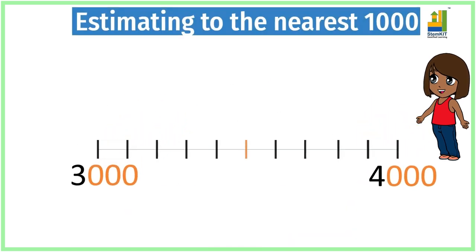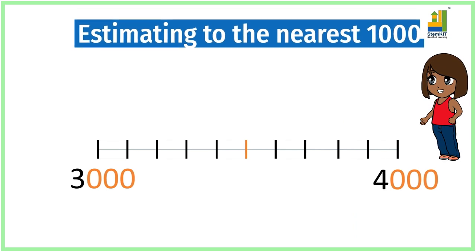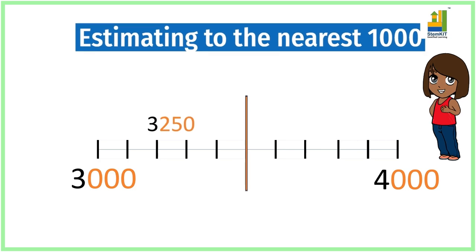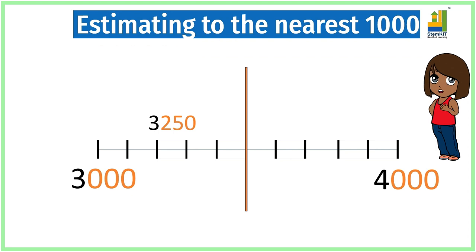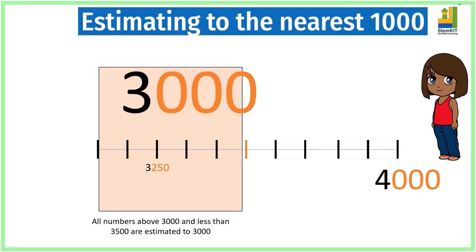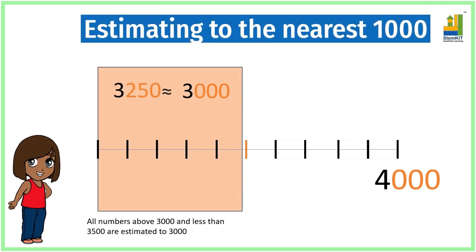Let us take the lower and upper thousands on the number line. Now, let us take the number 3250 on the number line. Notice the midpoint. So, 3250, estimated to the lower thousand, is equal to three thousand.